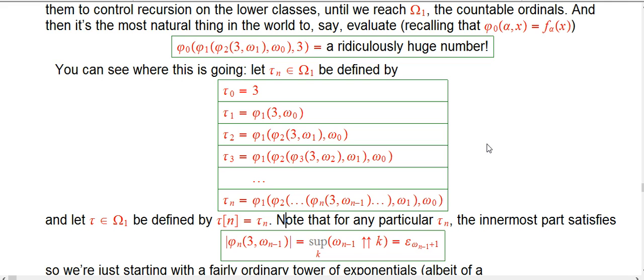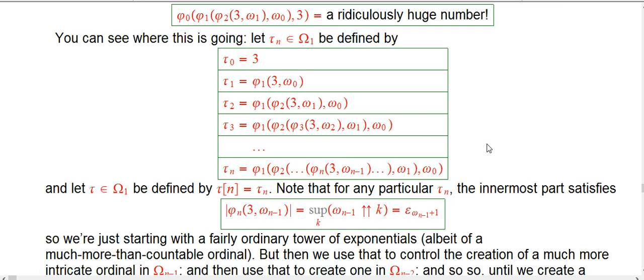Here's a reminder that the very innermost part where we start is just a tower of exponents of one of these little ω gadgets. If you only pay attention to the ordinal height of that guy, it's just the next epsilon number after ω_{n-1} itself. That's a fairly standard ordinal construction.